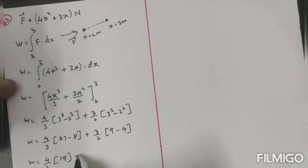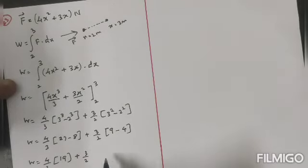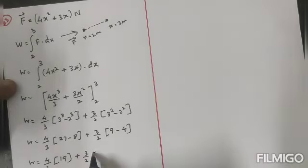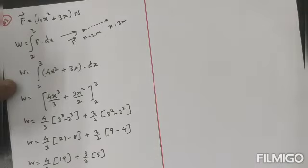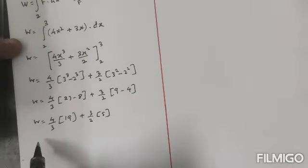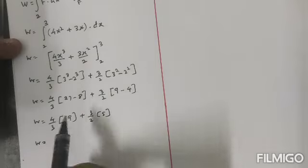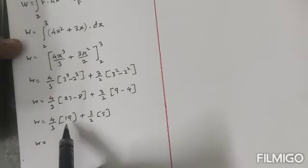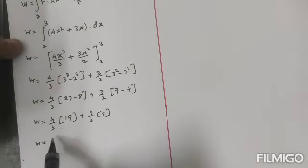next step, work done is equal to 4/3, 27 - 8 is 19, that is 19, plus 3/2 into 9 - 4, that is 5. So the next step, that is work done is equal to 4 × 19,